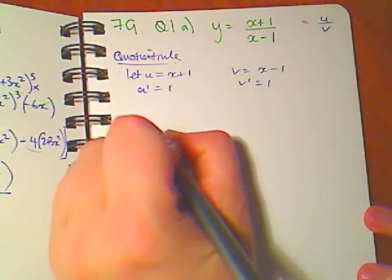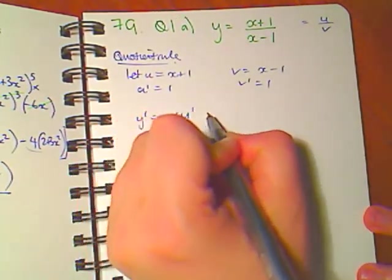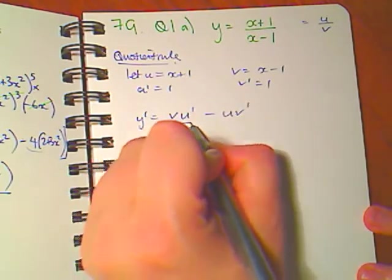Our Quotient Rule says that y dash equals v u dash minus u v dash over v squared.